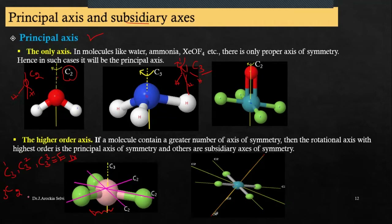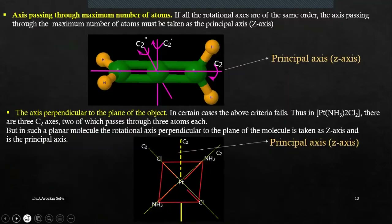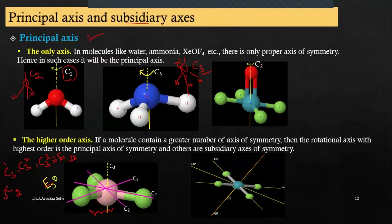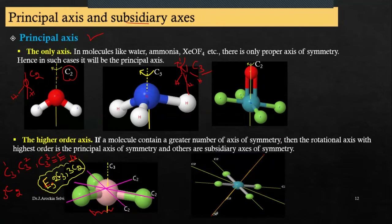When we summarize for BF3: E is there, then two C3s, then three C2s. Now among these, which is the principal axis? Whichever has the higher order axis is said to be the principal axis. Comparing C3 and C2, C3 has the higher order, so C3 will be the principal axis.